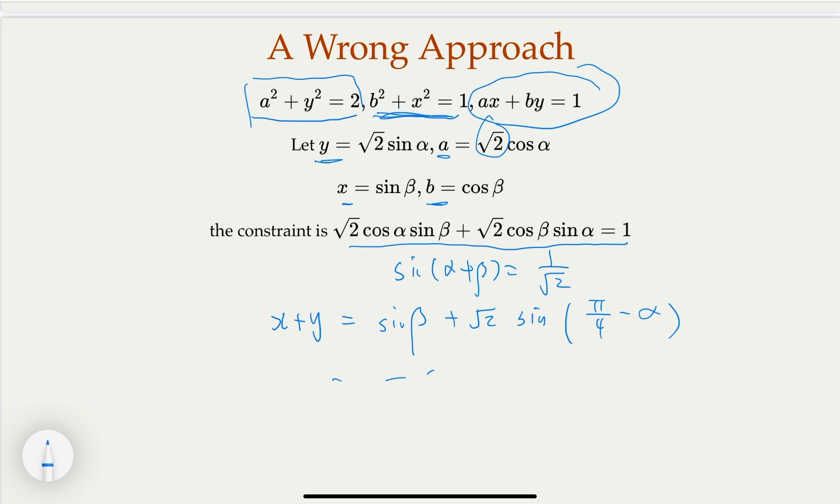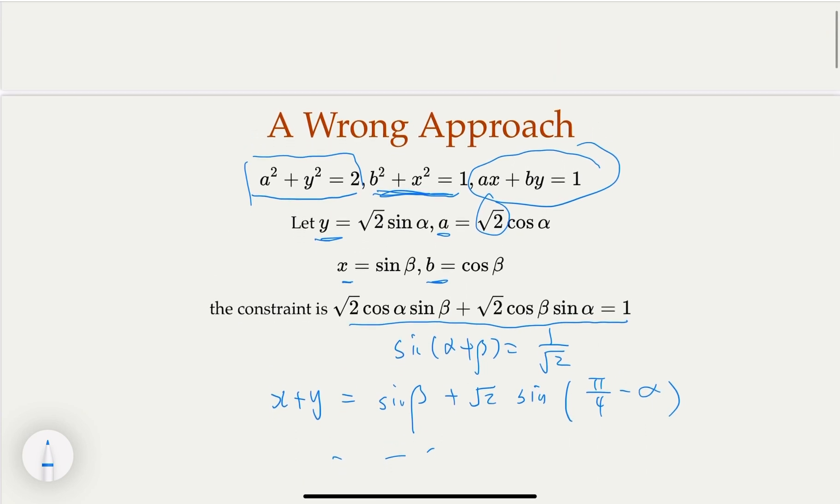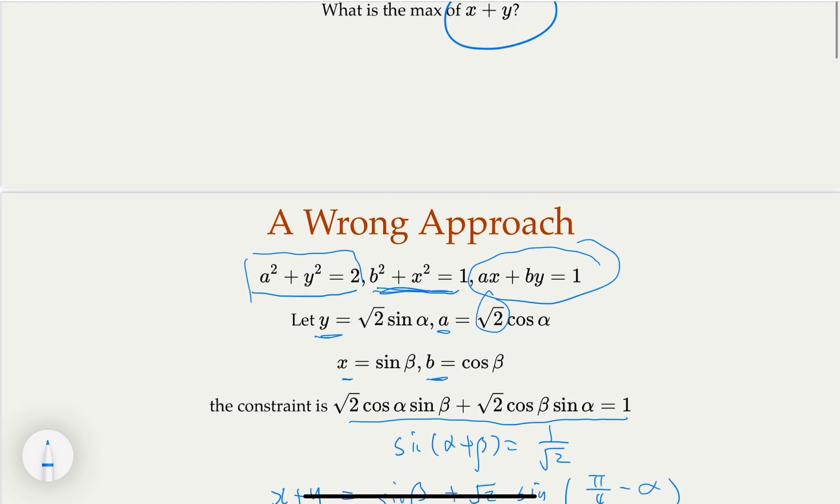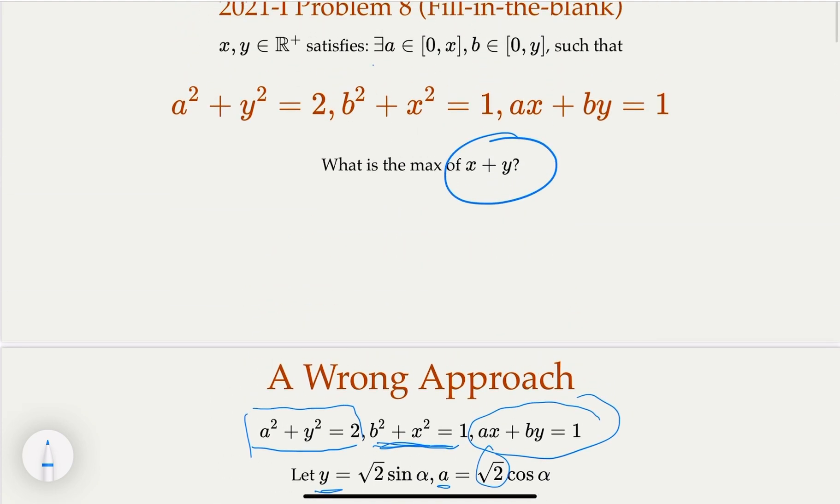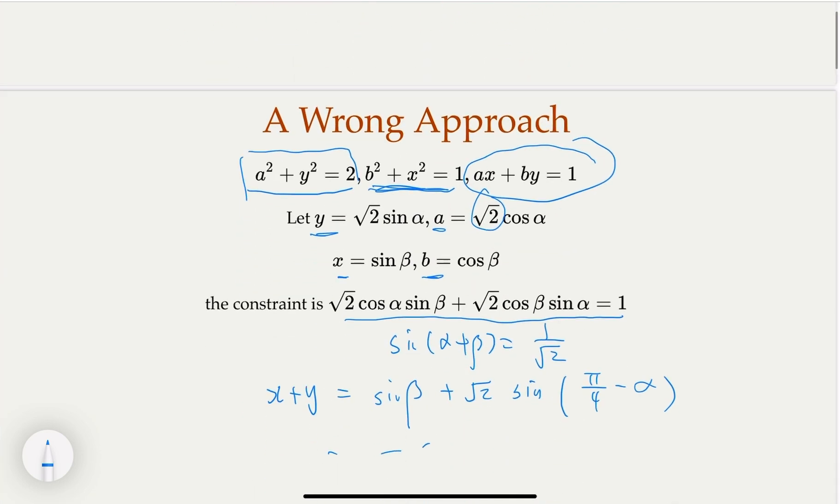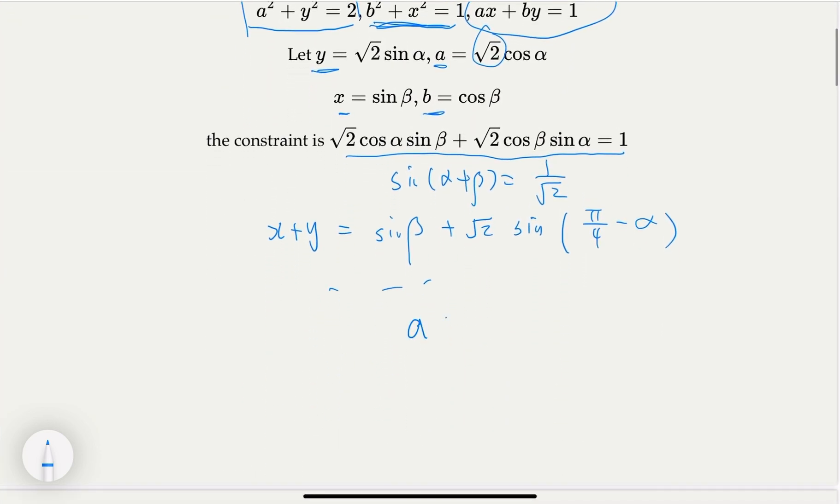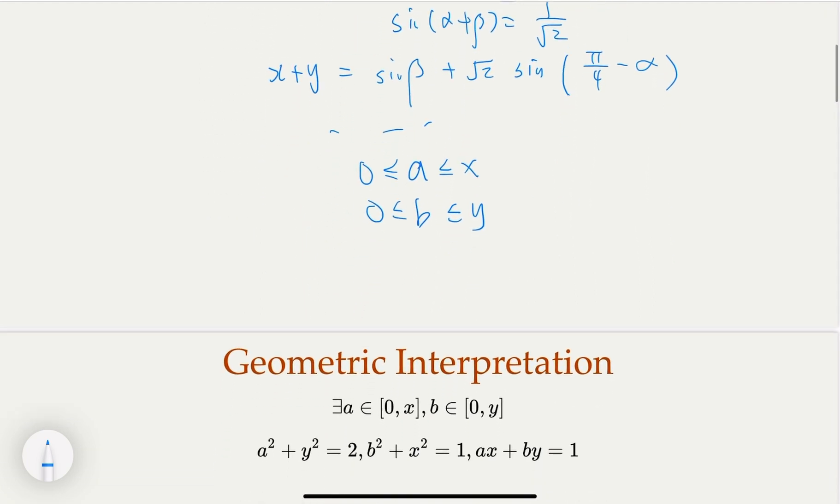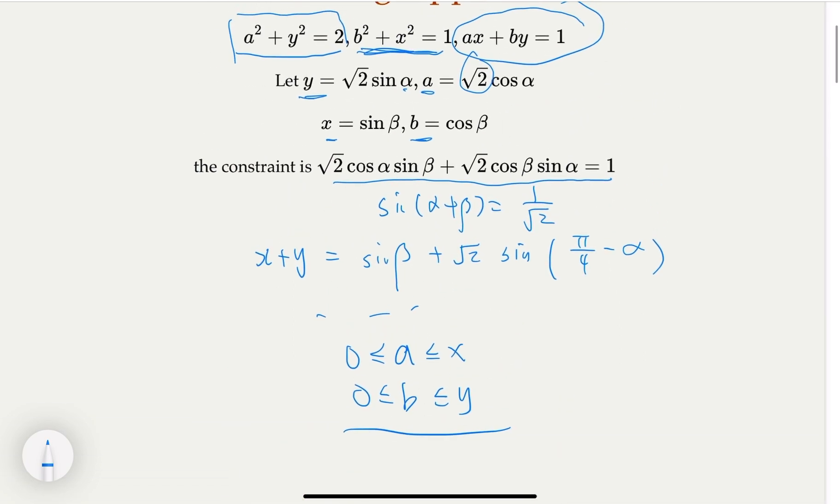Can you spot the problem? Here, we ignore the fact that a and b are related to x and y in this constraint. In other words, a is smaller or equal to x, b is smaller or equal to y. So if we have two free variables alpha and beta with this constraint, we are ignoring this. So you can continue with the algebra, but you may not get the right answer.